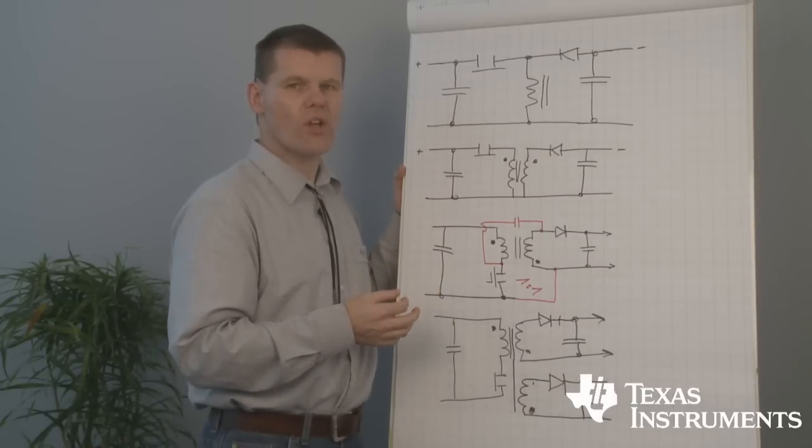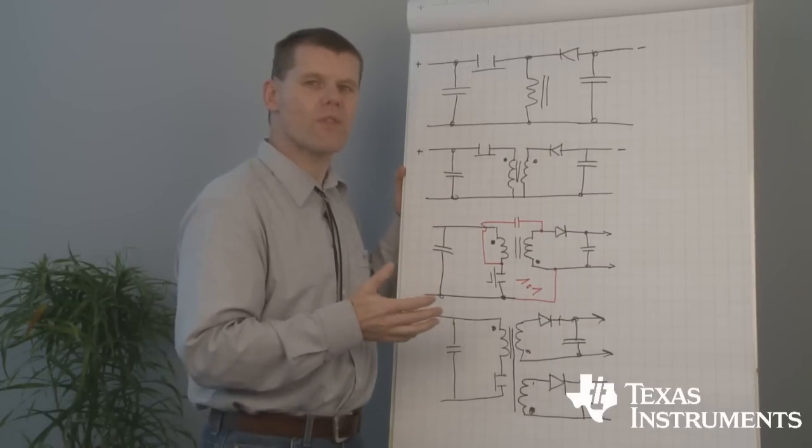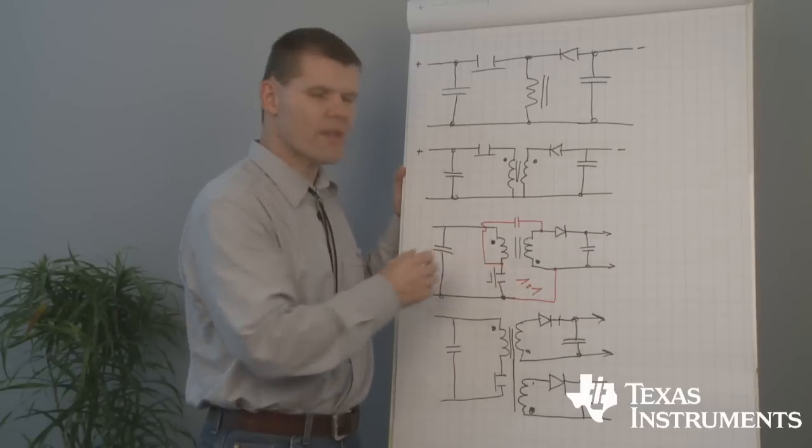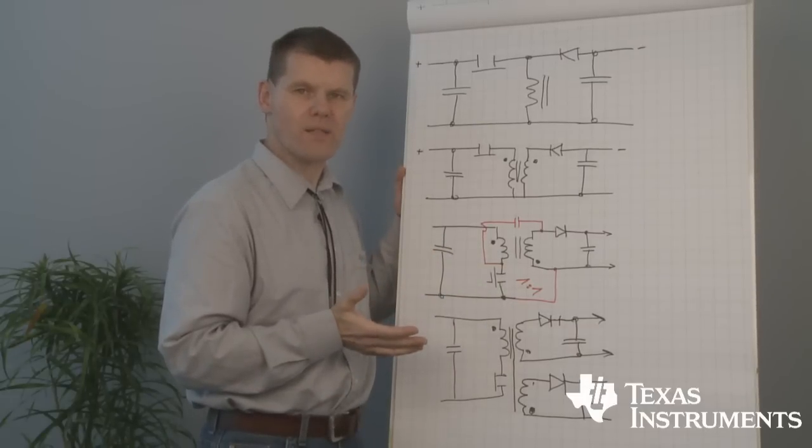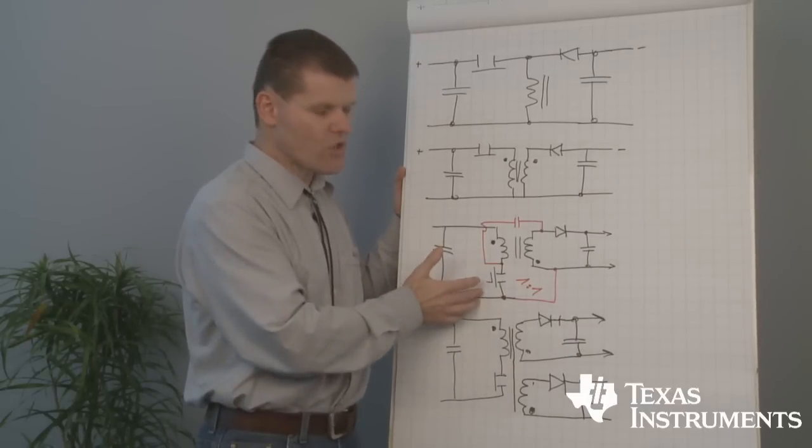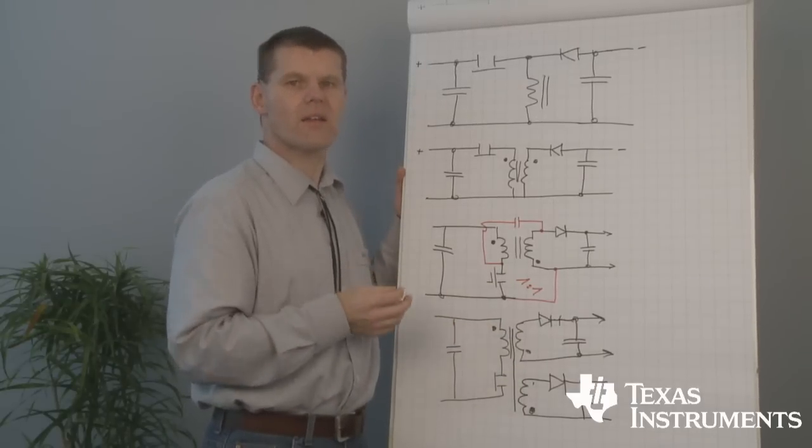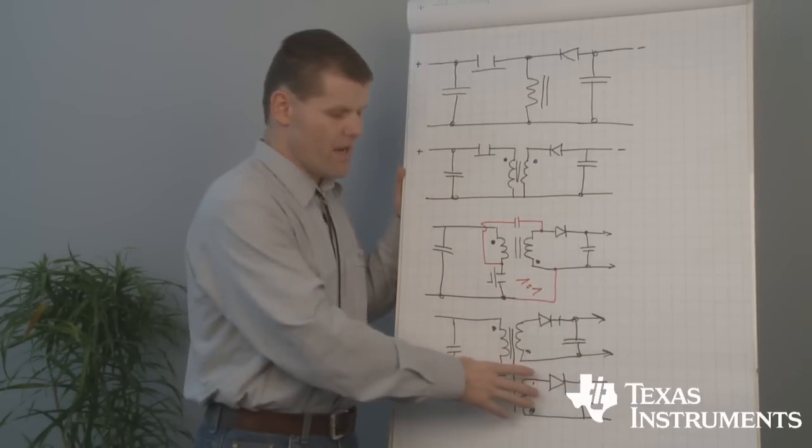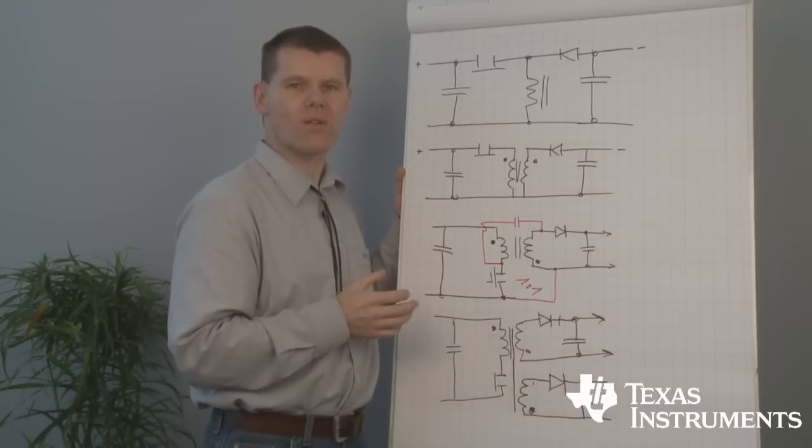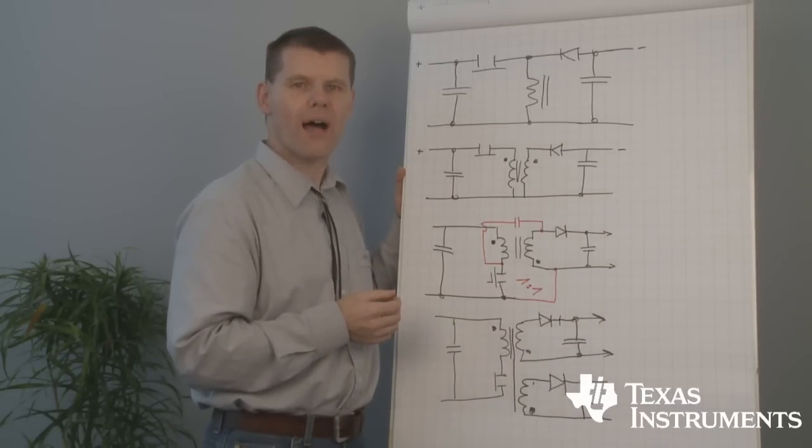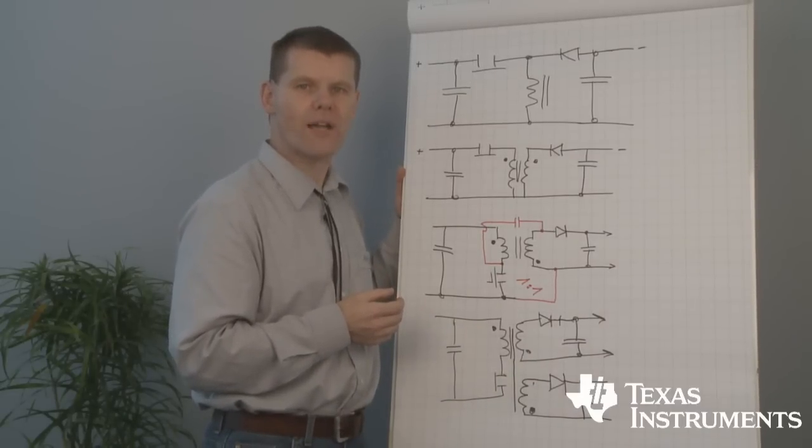As we already have learned with the boost converter and with the inverter, bandwidth is limited by the right half plane zero, because energy is transferred to the output when the switch is open. And the bandwidth in an isolated topology is also limited by the low-pass behavior of the opto-isolator.